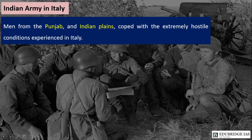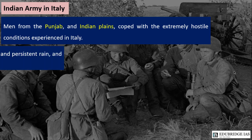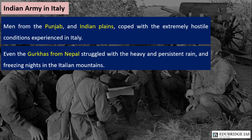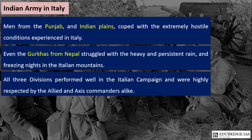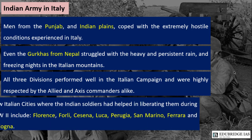Indian soldiers showed great bravery. Men from the Punjab and Indian plains coped with extreme hostile conditions in Italy, and even the Gurkhas from Nepal struggled with heavy and persistent rain and freezing nights in the Italian mountains. Gurkhas are still recruited in both the British and Indian armies. All three divisions performed well in the Italian campaign and were highly respected by both Allied and Axis commanders alike.